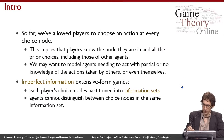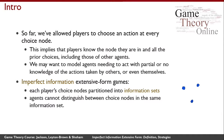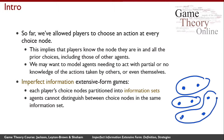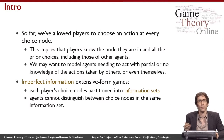What that means, schematically, is that if these are some different choice nodes in the game that all belong to the same player, we might say these form one equivalence class, these form another, and these form a third. The player wouldn't know which of two choice nodes he was at when asked to make a choice, but he would know he was at one of those two and not the others, because they're in different equivalence classes.